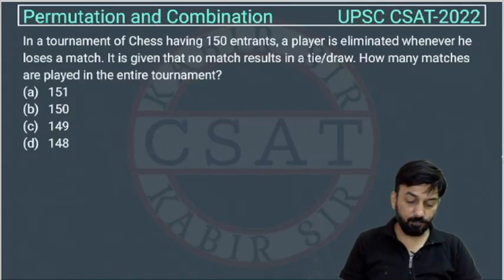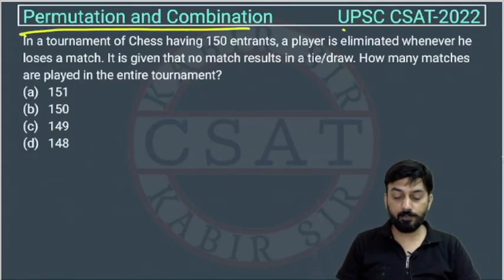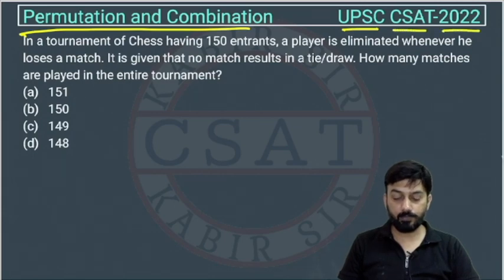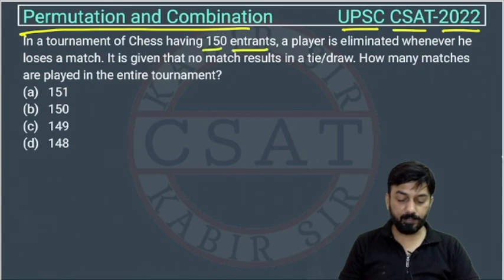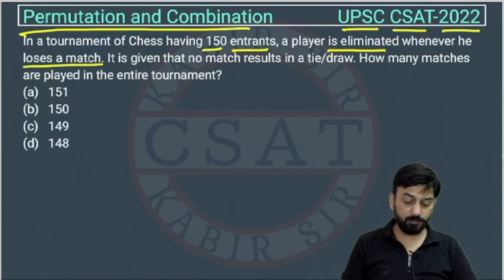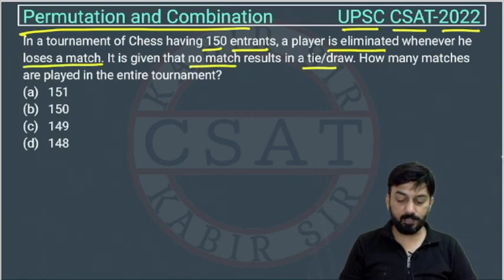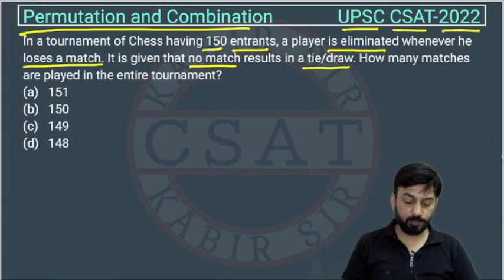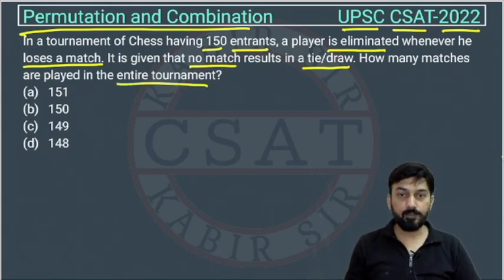This is a question from the permutation and combination chapter, asked by UPSC in their CSAT paper of 2022. In a tournament of chess having 150 entrants, a player is eliminated whenever he loses a match. It is given that no match results in a tie or draw. How many matches are played in the entire tournament?